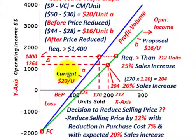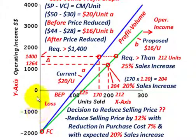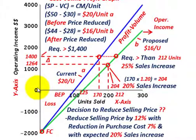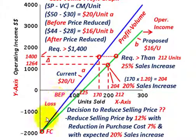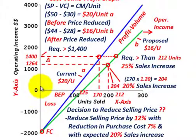In both cases, we have a fixed cost of $2,000. Before we sell any units, that $2,000 is a negative operating income — we have to cover our fixed costs before we have any positive operating income. Based on the current $20 per unit contribution margin, we'd have to sell 100 units to break even. That's $2,000 fixed cost divided by $20, which gives us our break-even point of 100 units. Everything below that zero operating income line is a loss.